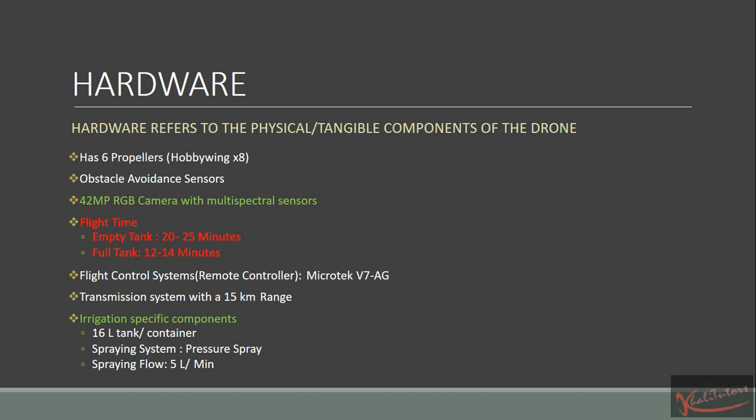A transmission system is a physical component — there is an actual component in the drone which is responsible for transmission. Other additional components specific to my drone relate to irrigation. The drone has a 16-liter tank and uses a pressure spraying system with a spraying flow of 5 liters per minute. As you can see, all of these are physical or tangible components. I will show you how to put this into a proper paragraph the way you are supposed to include it in your portfolio.